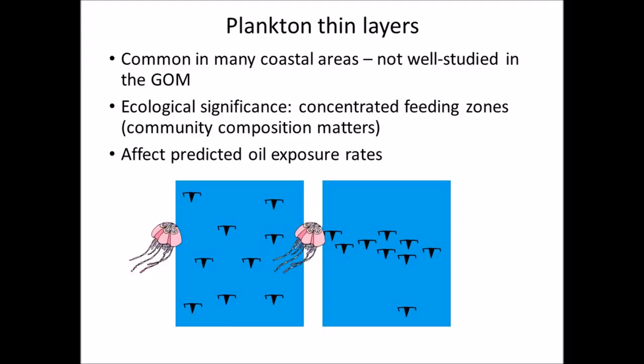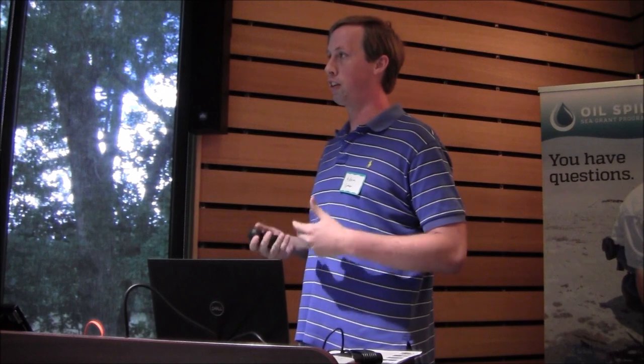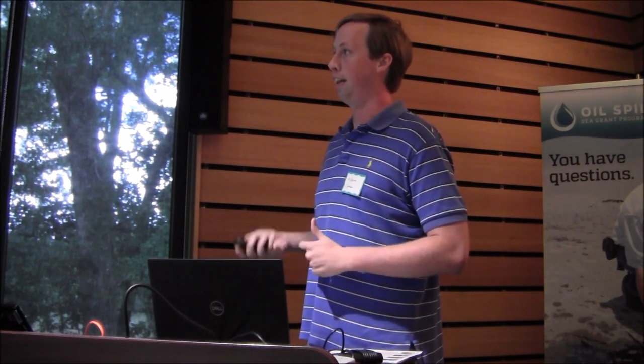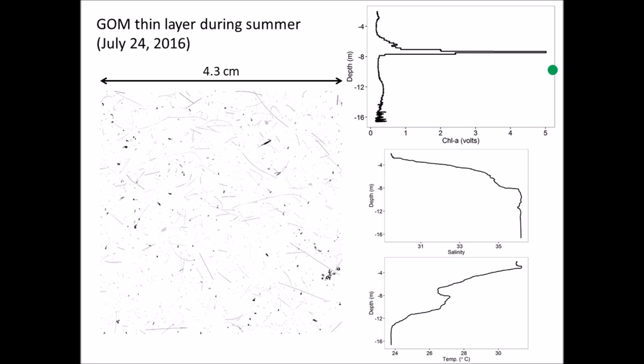One topic I've been researching for quite a while is plankton thin layers — dense aggregations of plankton, usually several times the background concentration, where they aggregate within an area less than five meters vertically. Nothing has been studied about these in the Gulf of Mexico, though they're well described in other environments. The ecological significance is that they provide a concentrated feeding zone. A jellyfish predator can exploit prey resources much more rapidly when copepods are aggregated in a thin layer versus randomly distributed. These are considered hotspots of activity, and if prevalent, they can affect how we understand oil exposure rates.